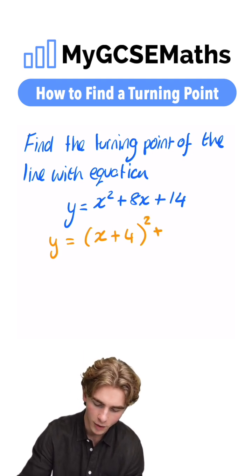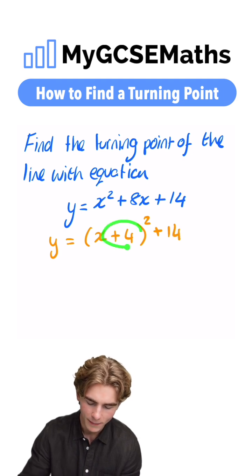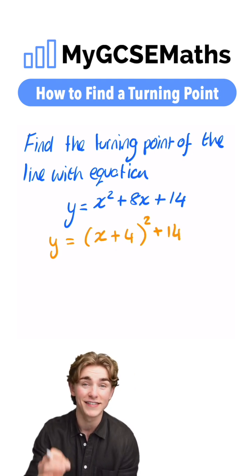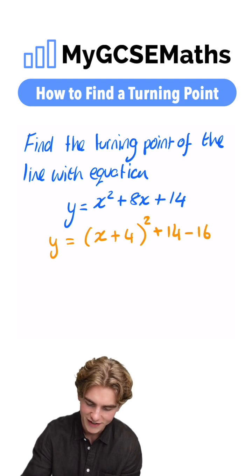We're going to copy down the number on the end, our plus 14 here, and then we're going to look at this number here, positive 4. We're going to square it. That's 16, and we're going to take it away from our equation, so we have minus 16 on the end here.